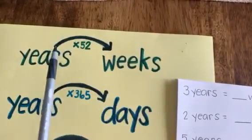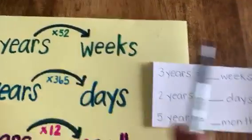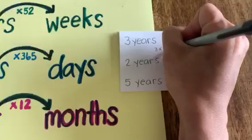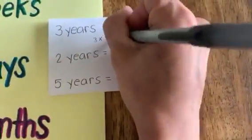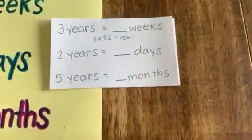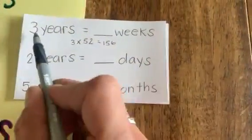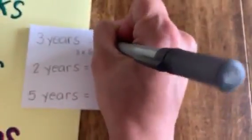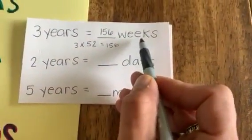Three, three times 52. Three times 52 equals 156. So if my son is three years old, he's actually 156 weeks old as well.